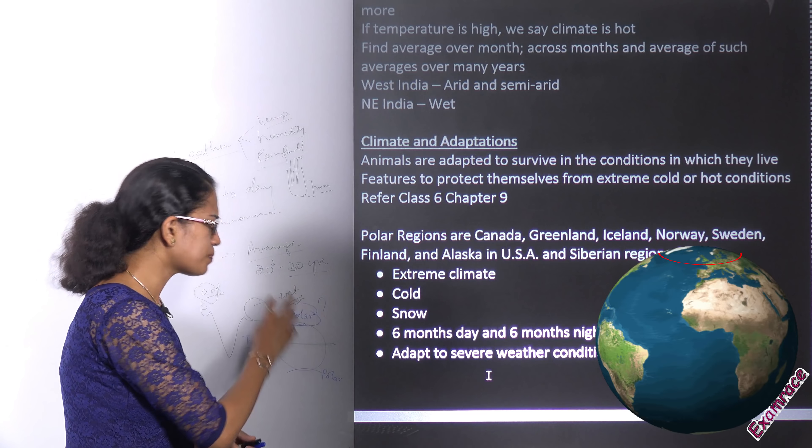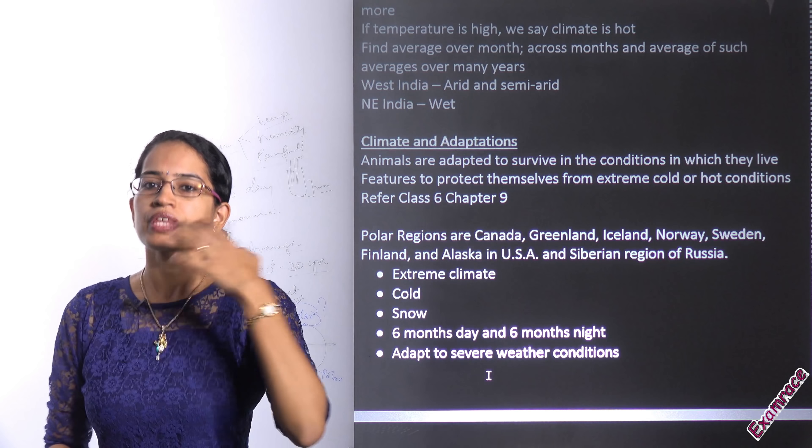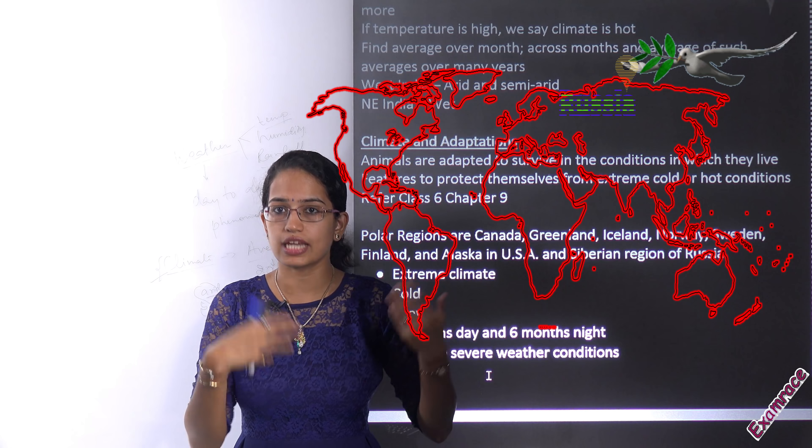Let's first focus on the polar area. This polar area is usually snow-covered. Camouflage is a very important aspect here. You can see penguins, snow leopards, and polar bears — all of these have a color similar to the snow. A color closer to white is preferred because they are trying to camouflage themselves to avoid attack from other animals. Taking the polar bear as an example, camouflage is the first point of adaptation.